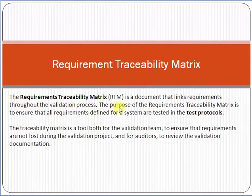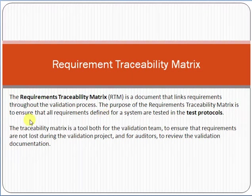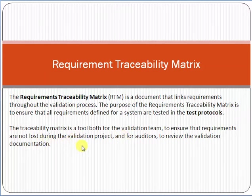The Requirement Traceability Matrix — short form RTM — is a document that links requirements throughout the validation process. The purpose of the RTM is to ensure that all requirements defined for a system are tested in the test protocol. The traceability matrix is a tool both for the validation team to ensure requirements are not lost during the validation project, and for auditors to review the validation documentation.